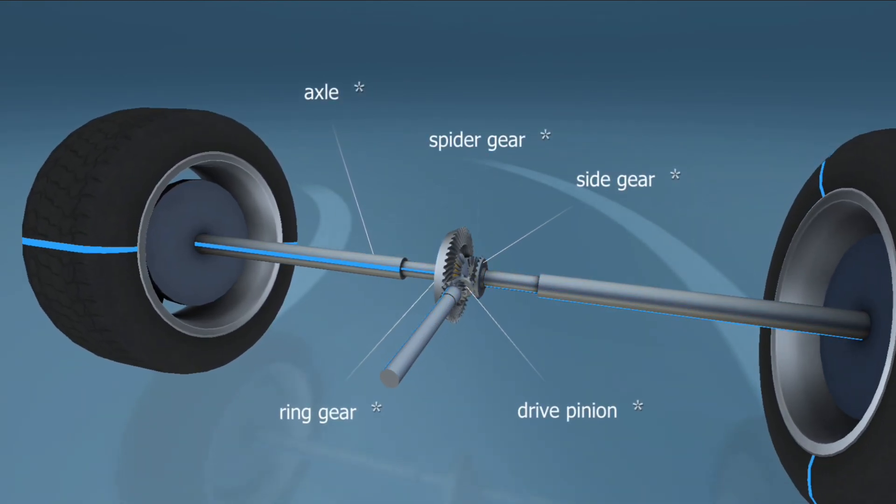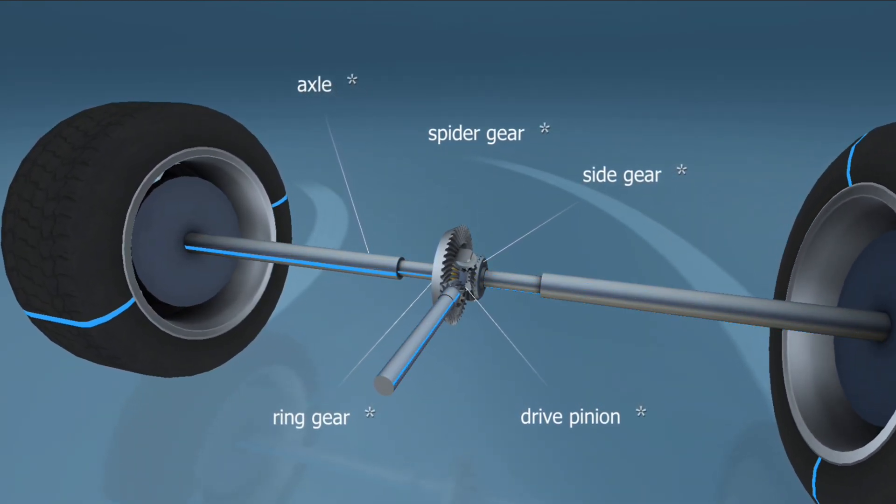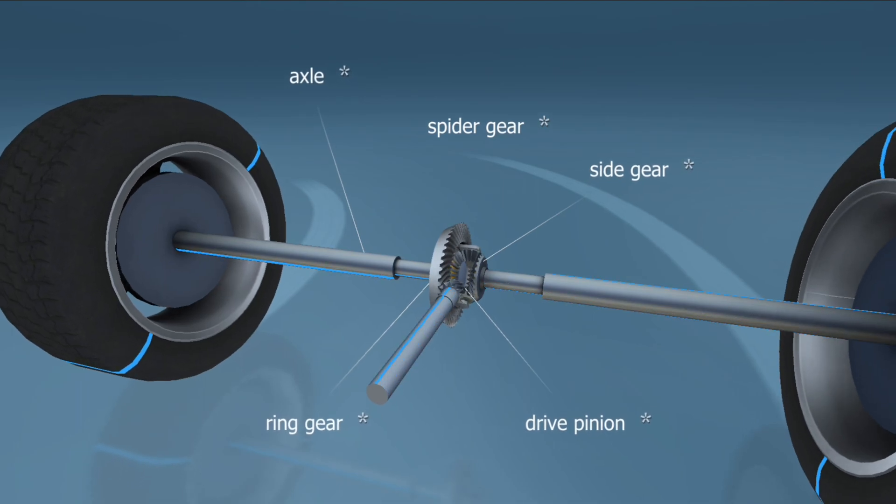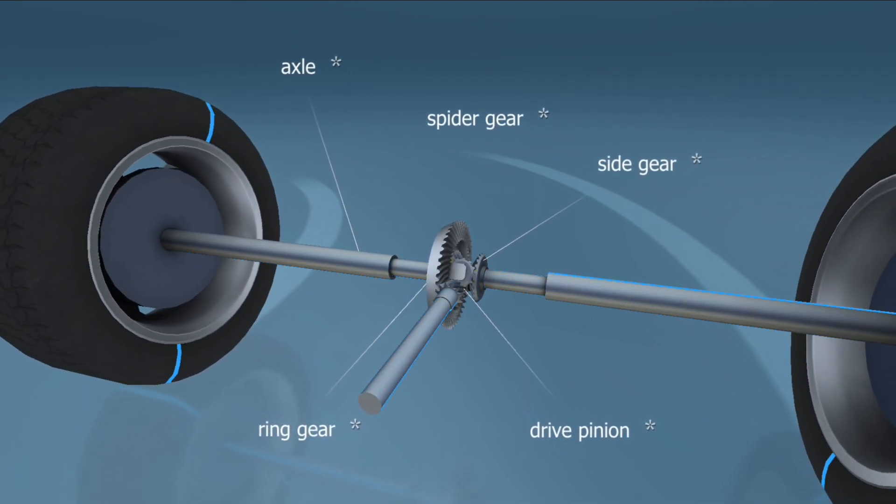When the car is turning, the spider gears revolve around their own axes, thereby letting the wheels rotate at different speeds.